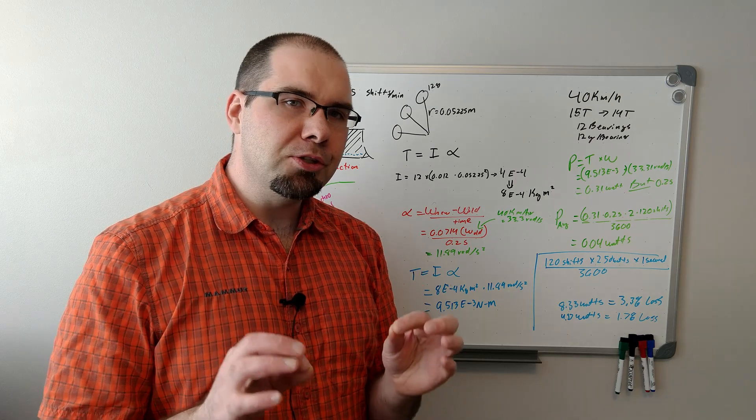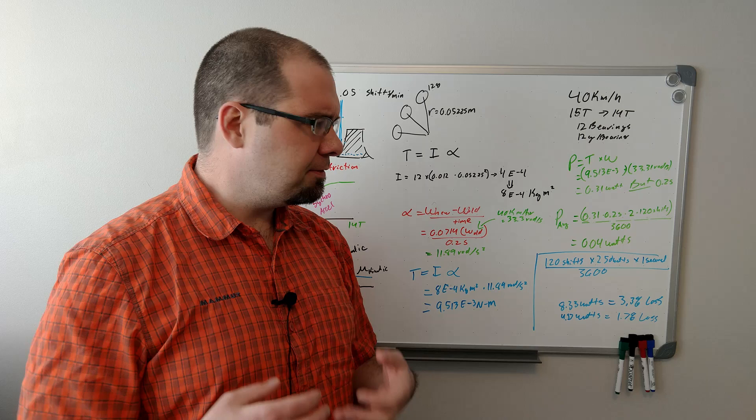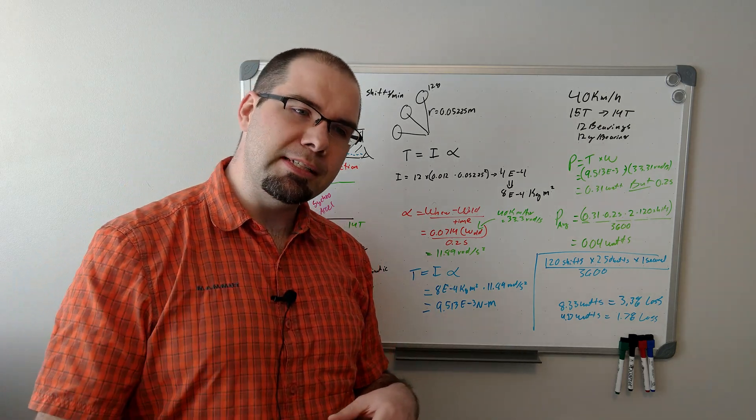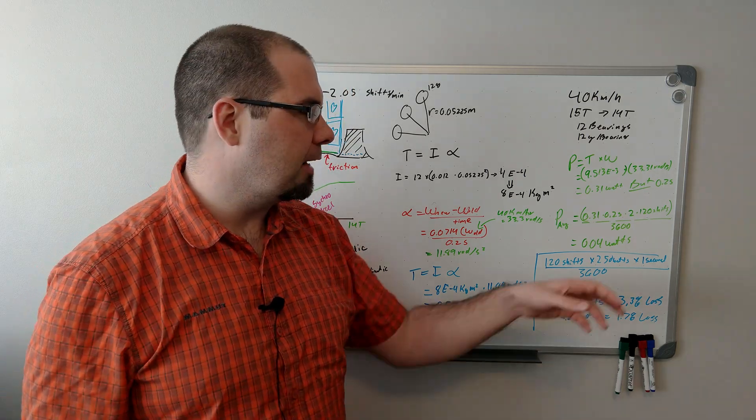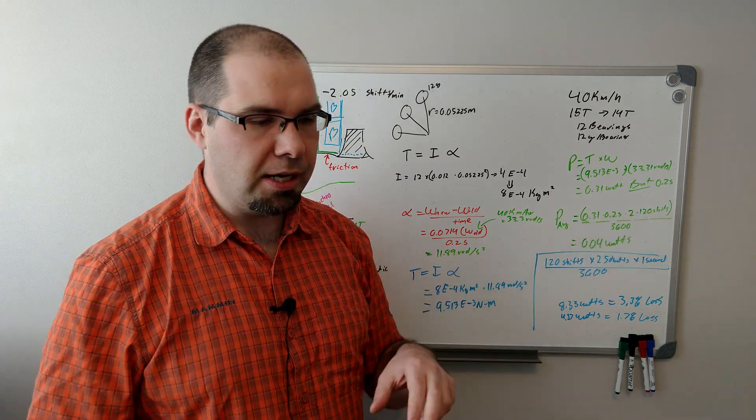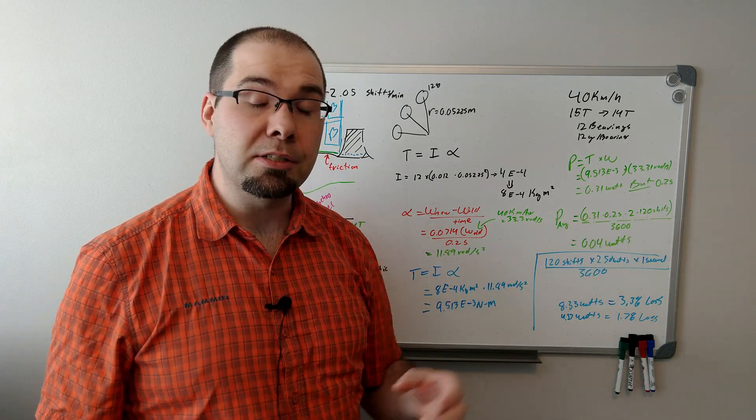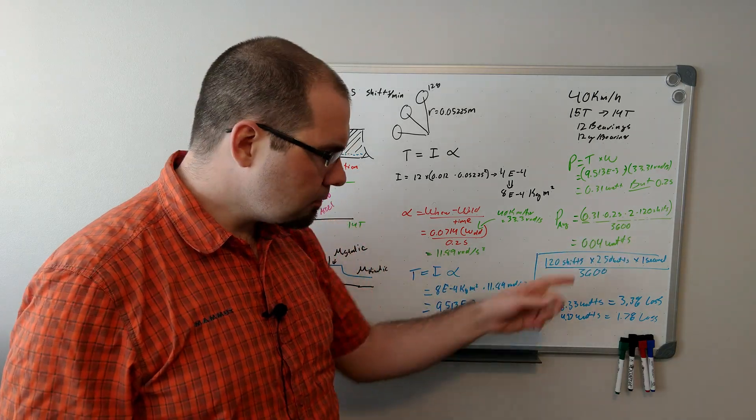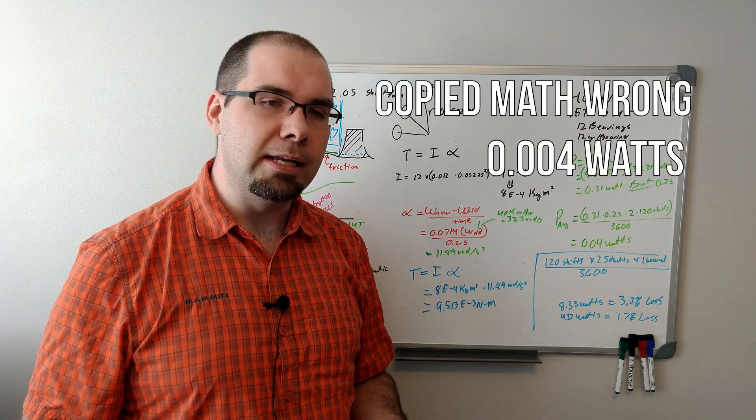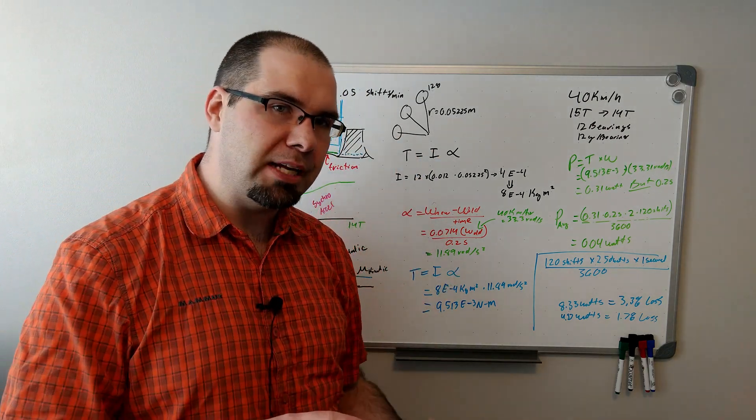But keep in mind, that's only during those 200 milliseconds that we're actually shifting. Let's figure out what the average would be. And I'm going to beat up on CeramicSpeed here a little because I'm figuring the disengaging and reengaging is going to take at least the same amount of energy. We have 0.3 watts, 0.2 seconds, two times for the disengage, reengage, 120 shifts, and all over 3,600 seconds in an hour. 0.04 watts. This is nothing. This is absolutely tiny. This shows how the synchro method can actually speed up and slow down and enable shifting to actually happen.